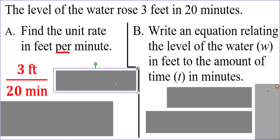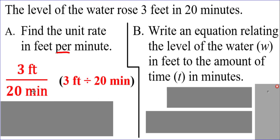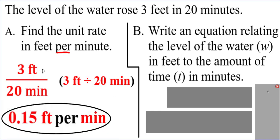As a division problem in your calculator, the numerator is first, the denominator is second. That's the order you will type it in. When you divide, this gives you the feet per minute: 0.15 feet per minute. So we got our unit rate. Now that we have our unit rate, we can write our equation.